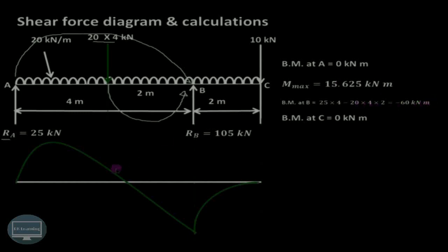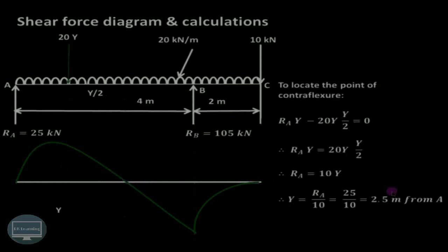Because the entire beam carries a UDL, the bending moment diagram is a second degree polynomial, giving a parabolic curve. This is the point of contra-flexure — where the bending moment diagram changes sign from positive to negative, meaning the bending moment is zero at this point. Suppose it is at a distance Y from A. We extrapolate this section on the main diagram and note that the bending moment at this point is zero. The total UDL from A to this section is 20 multiplied by Y.